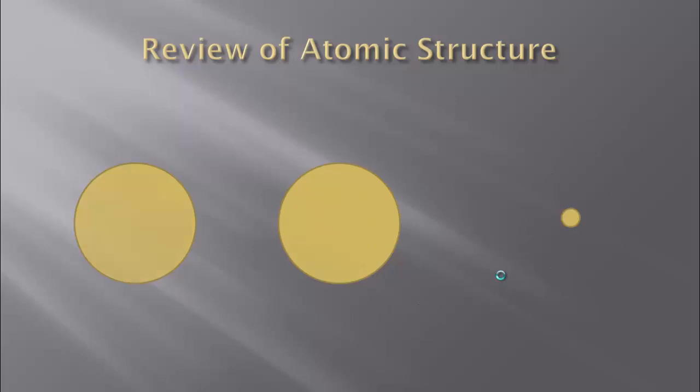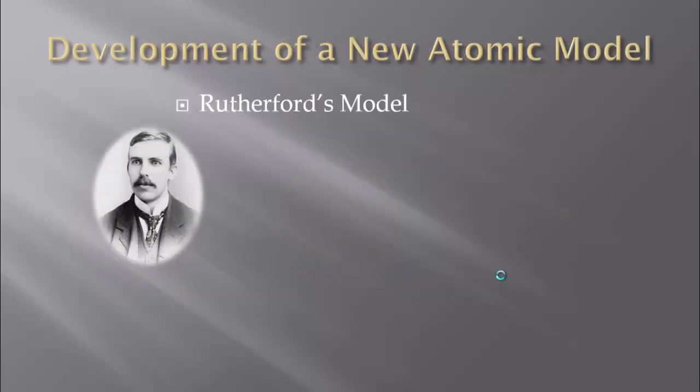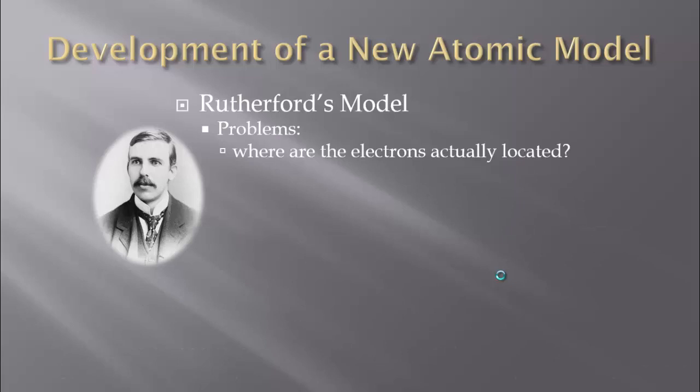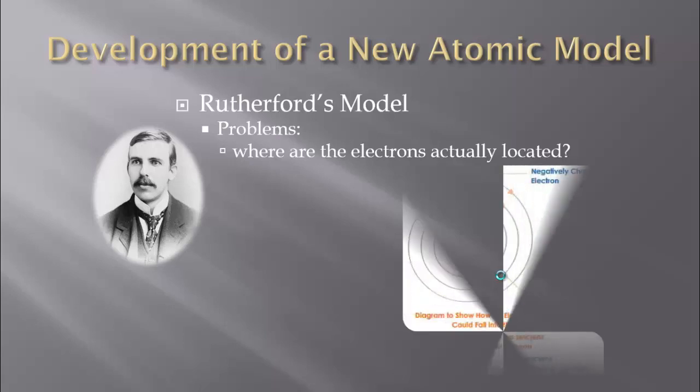However, there are a few problems with Rutherford's model. The first one is where exactly are those electrons located? He told us that they were outside the nucleus, but where? Are they just floating there? Are they far? Are they close? We don't know much about that electron and where they're located.